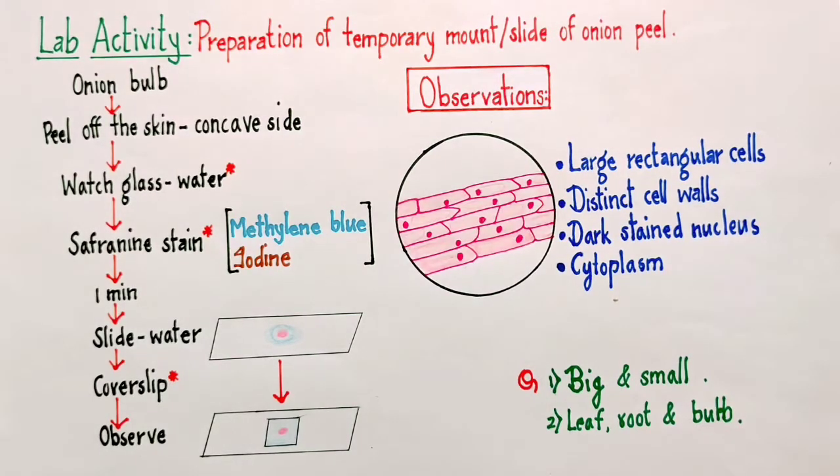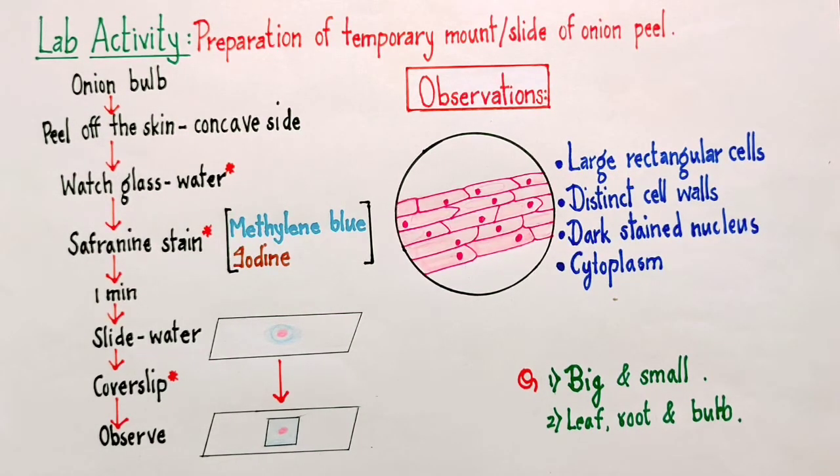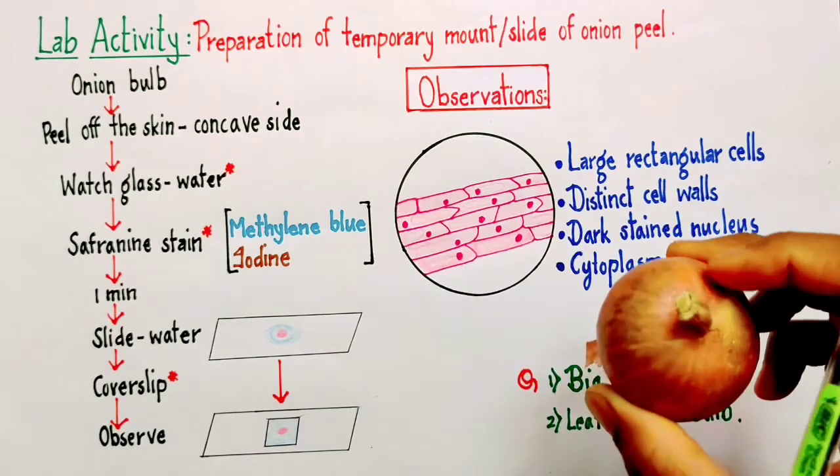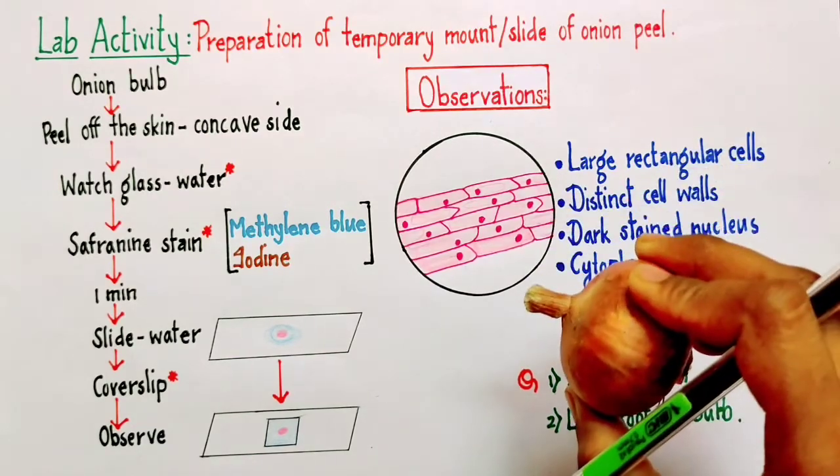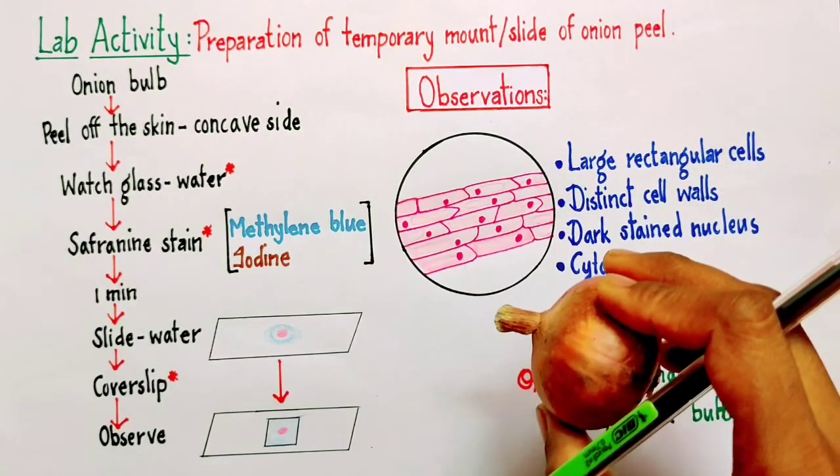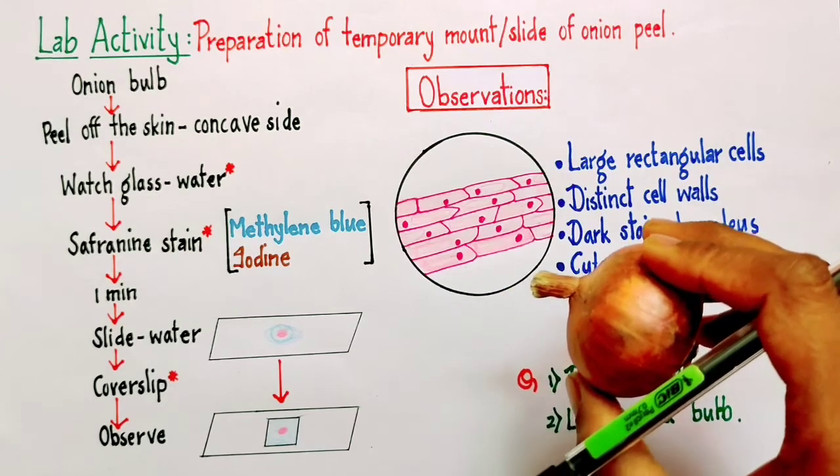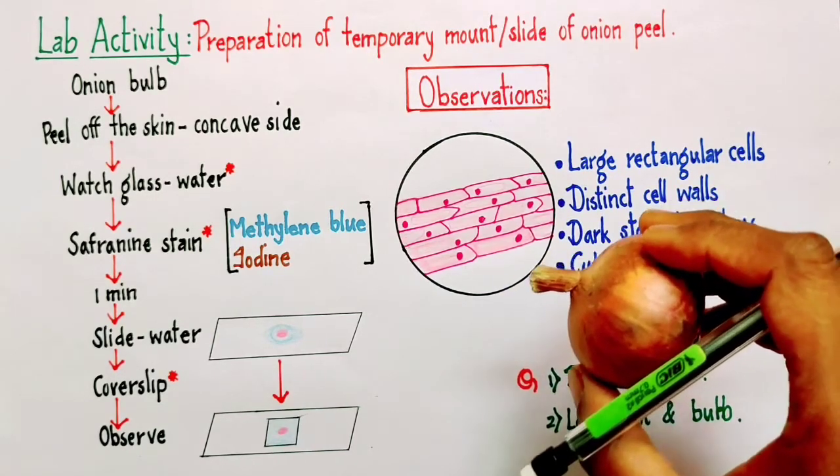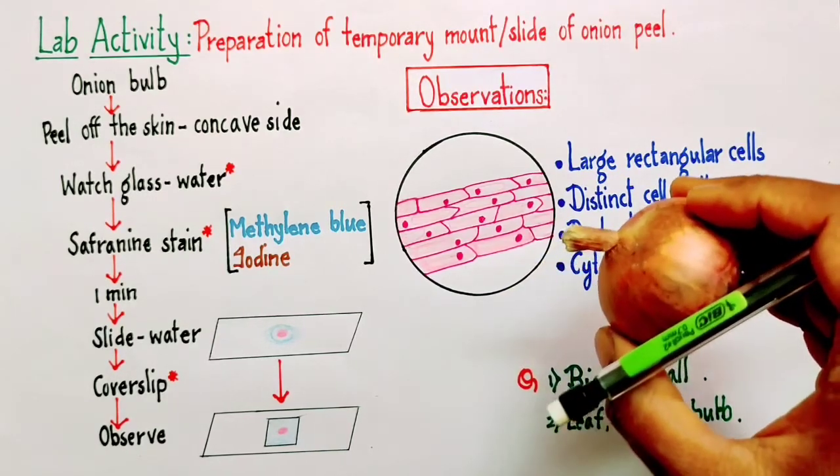Now why we need to prepare a temporary slide? Suppose if I want to see the cells of onion, can I take this onion bulb directly and place it in the microscope and visualize it? No, I won't be able to see the cells with that clarity and I won't be able to get the details of cells.